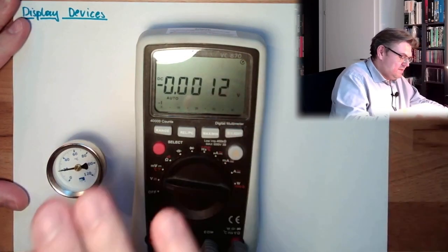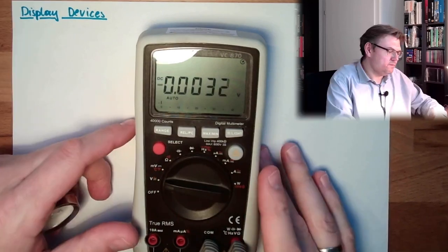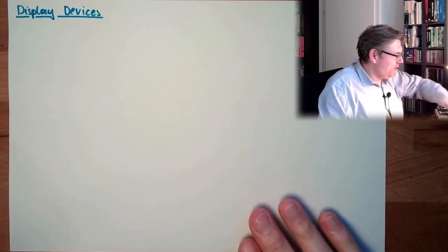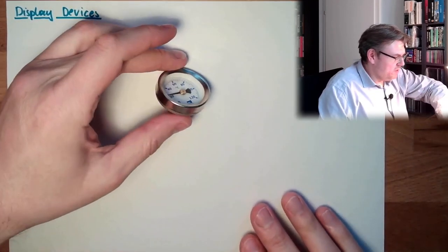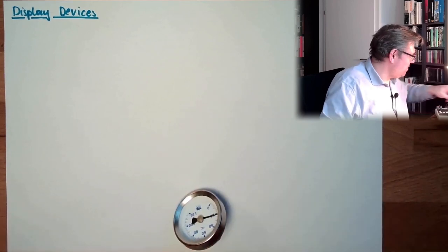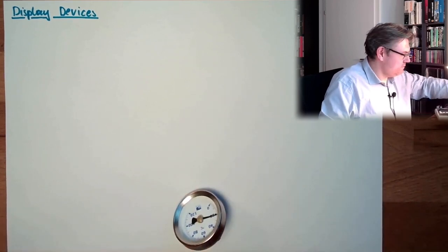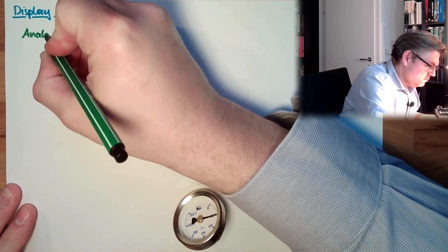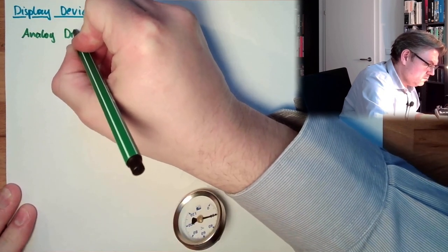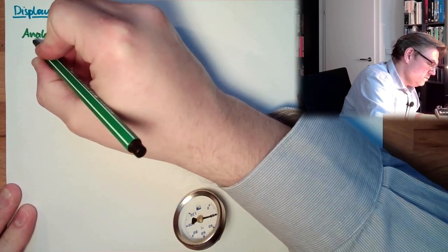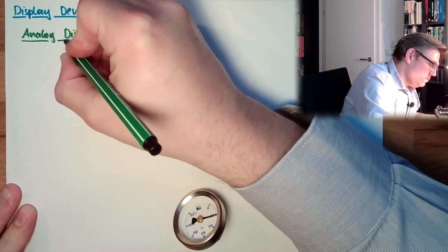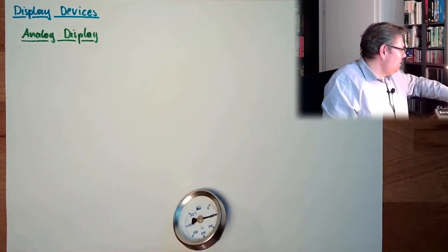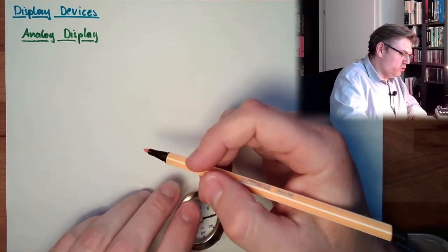So let's write those things down. So basically, we have the possibility of an analog display, like that, write it down, analog display. And the other possibility is the digital display.